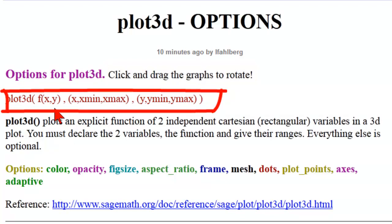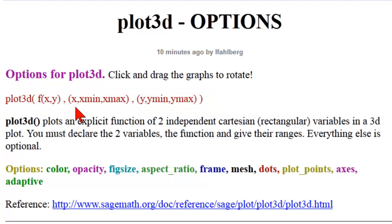The basic command, Plot 3D, has three parameters. The function in two variables, the declaration of the first variable and its range. This will be plotted on the left axis. The declaration of the second variable and its range, which will be plotted on the right axis.